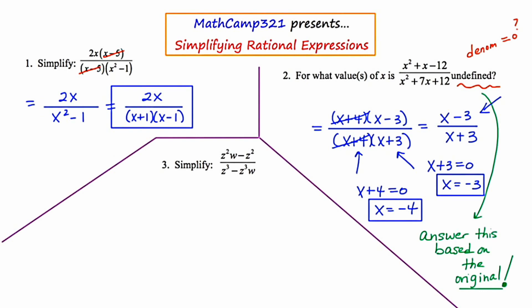Let's go to the last example of this slide. They want us to simplify z squared w minus z squared all over z cubed minus z cubed w.